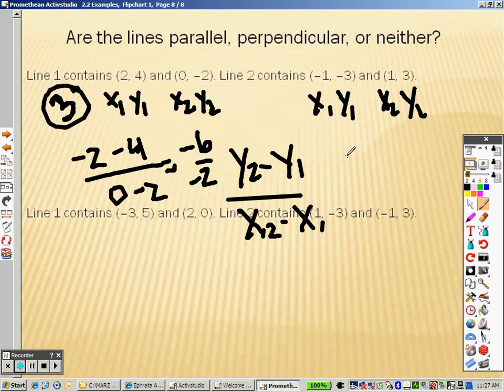Over here, it would be 3 minus negative 3 over 1 minus negative 1, which is like saying that we get 6 over 2, which is 3.